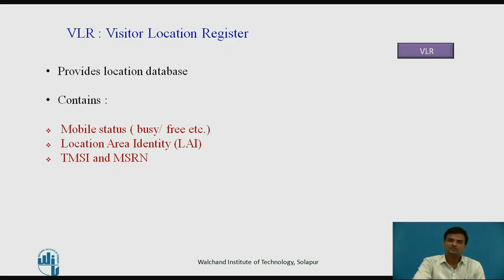VLR – Visitor Location Register: This contains selected information from the HLR that enables the selected services for the individual subscriber to be provided. The VLR is commonly realized as an integral part of the MSC rather than a separate entity, making access faster and more convenient. Parts of the database stored in VLR include the TMSI number and roaming number. When a mobile station visits another location, a temporary database is formed in the VLR.